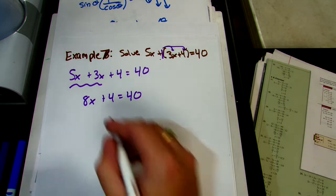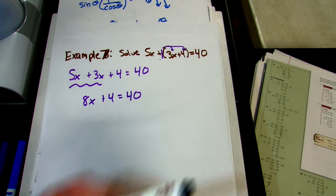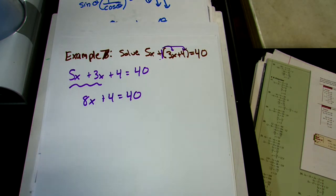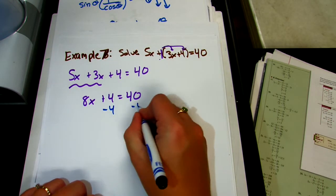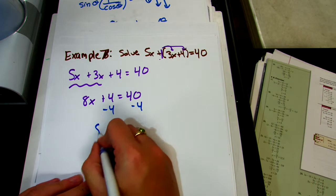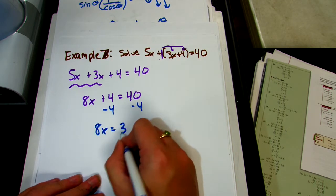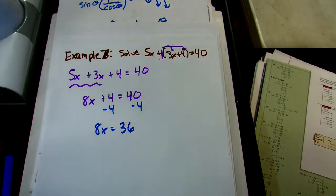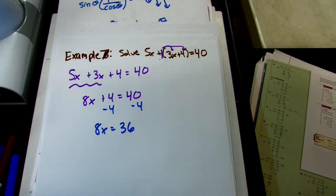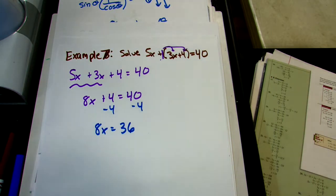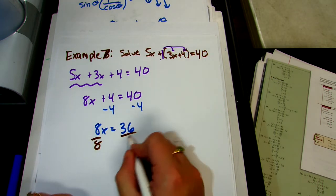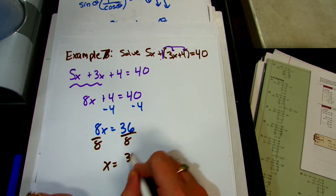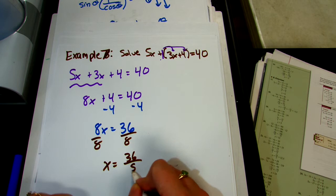We take care of addition and subtraction first, so we subtract 4 from both sides: 8x equals 36. Then we divide by 8, so x equals 36 divided by 8.